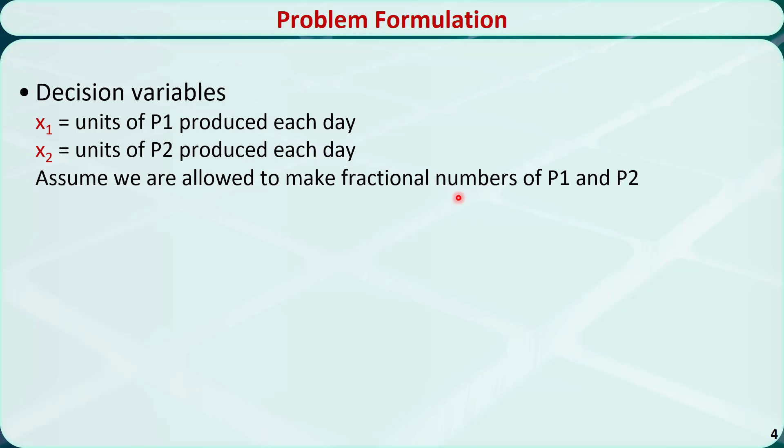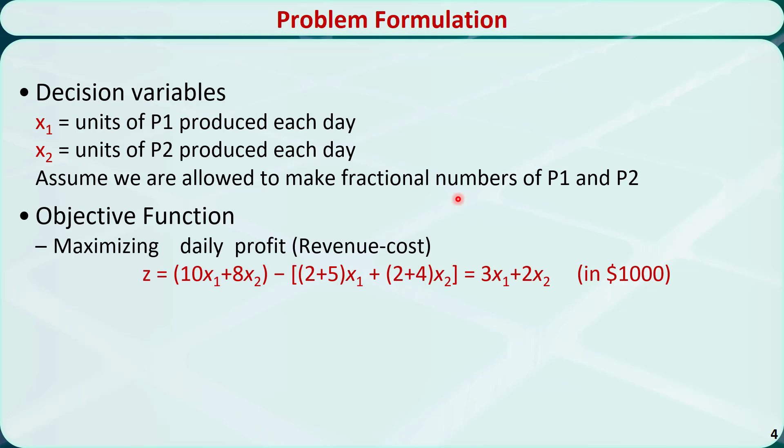We want to maximize the daily profit. So the objective function is equal to the total revenue minus the total cost. The total revenue is equal to the selling price times the quantity for both P1 and P2. The total cost is the unit raw material cost plus the unit labor cost times the quantity for both P1 and P2. It is equal to 3 times x1 plus 2 times x2. We use z to represent the objective function. It should be mentioned that the unit is in $1,000.